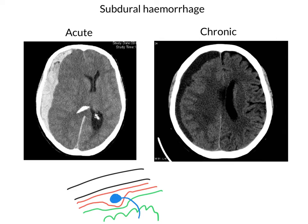Another feature to look out for when trying to diagnose a subdural is that these are confined to one side and they're typically crescent shaped. Both of these CT scans are affecting the right hemisphere, so they're confined just to one half of the cranial cavity and they're crescent shaped, meaning that the blood is collecting all around the superficial part of the brain — a crescent shaped formation, different to the lens-shaped formation that we see in an extradural.